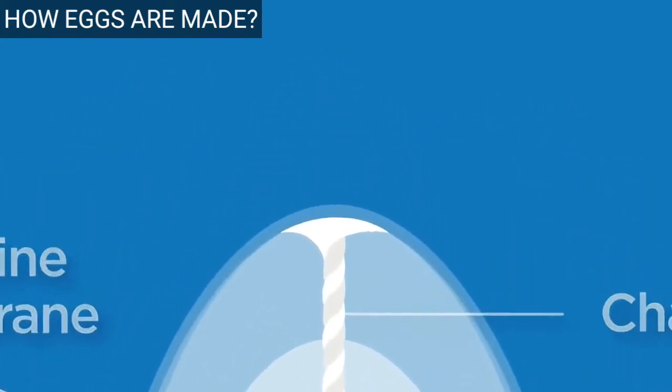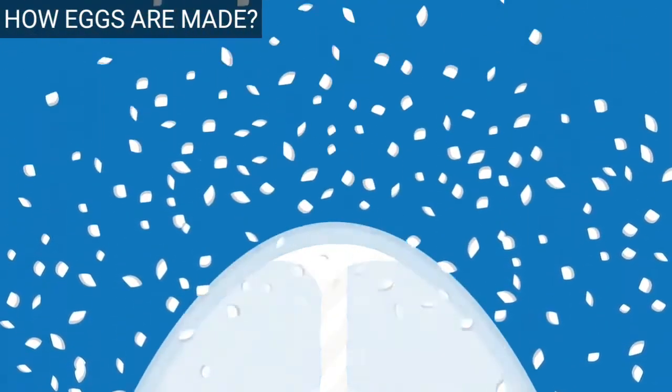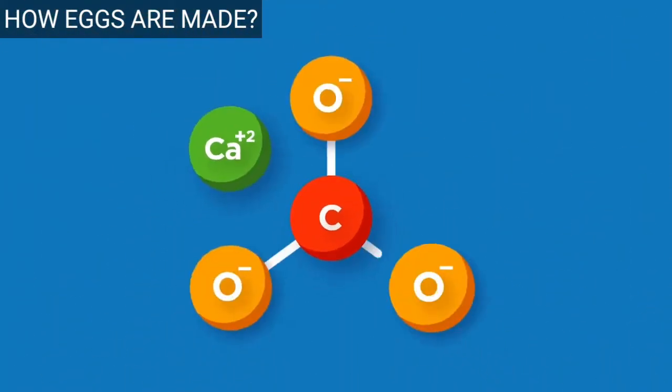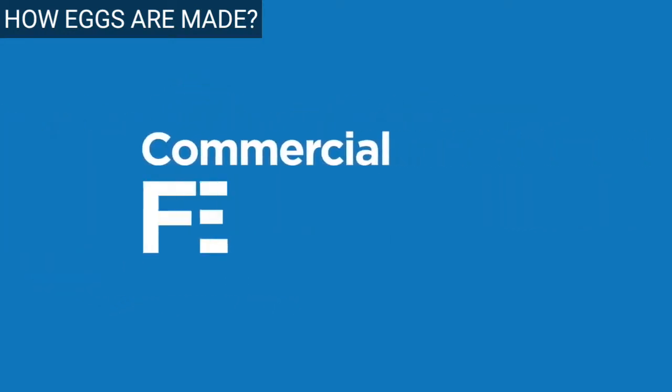Membranes cover the egg and protect it from bacteria. The eggshell is then deposited around the egg. It is made mostly of calcium carbonate. Calcium needs to be provided in adequate amounts in the hen's diet through commercial feed and supplemental calcium sources like oyster shell.